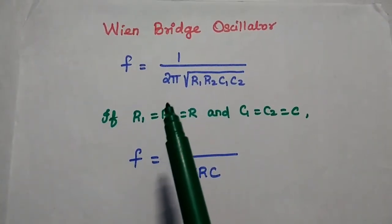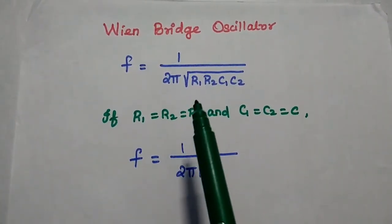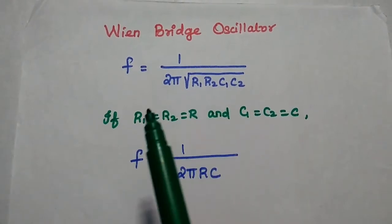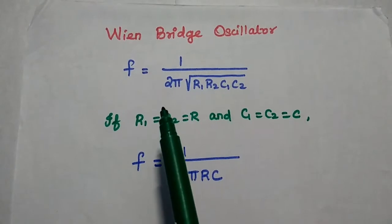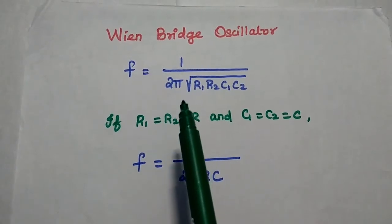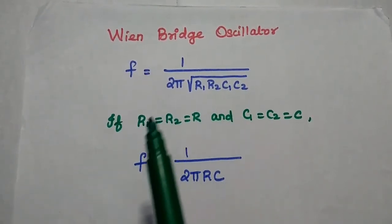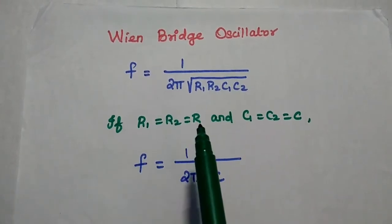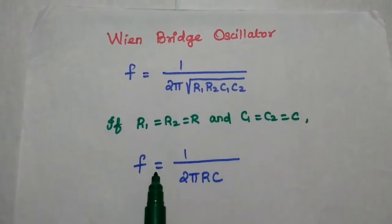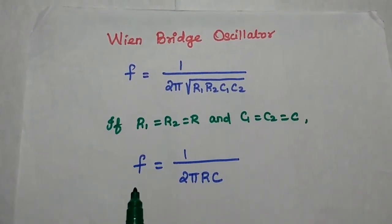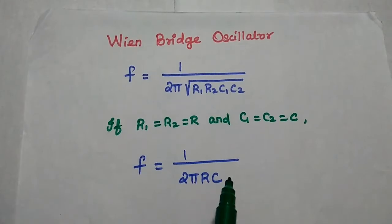Dear students, now we are going to solve important problems in Wien Bridge oscillator. The frequency of oscillation formula is f equals 1 by 2 pi square root of R1 R2 C1 C2. If R1 equals R2 equals R and C1 equals C2 equals C, then the frequency formula simplifies to f equals 1 by 2 pi RC.